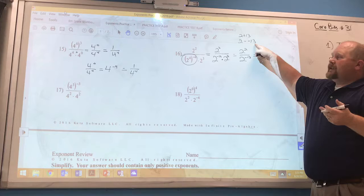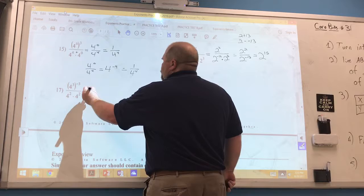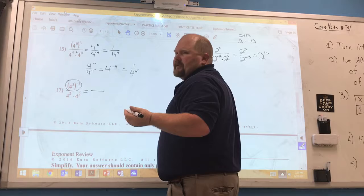Number 17. We're going to start by simplifying up here because there are parentheses. Parentheses always take place first. We need to do those first. Power to a power. So we have 4 to the negative 9.